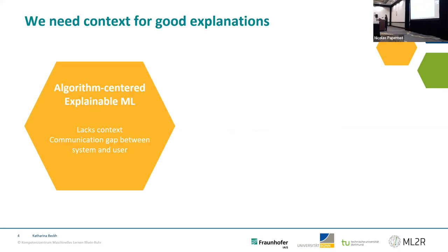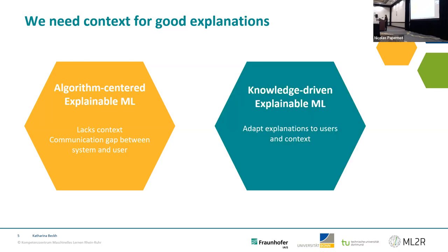What we currently have is what I claim to be algorithm-centered explainability. In the last few years, we have focused on generating explanations per se — really looking at how we can generate explanations. But these lack context, and there's a communication gap between the system and the user. What we want is rather knowledge-driven, so we want to provide context for users to increase the accessibility.